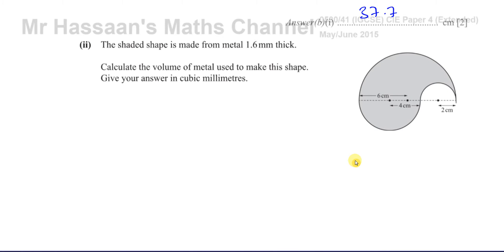Now for Part B2, it says the shaded shape is made from metal 1.6 millimetres thick. Calculate the volume of metal used to make this shape, giving your answer in cubic millimetres. Note that the thickness is in millimetres while the dimensions are in centimetres — we'll deal with that. The shape is three-dimensional with a constant cross-section, so it's like a prism. Volume equals cross-sectional area times the depth — how thick it is.